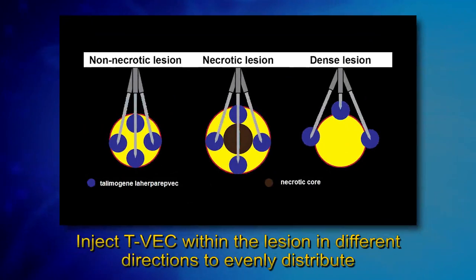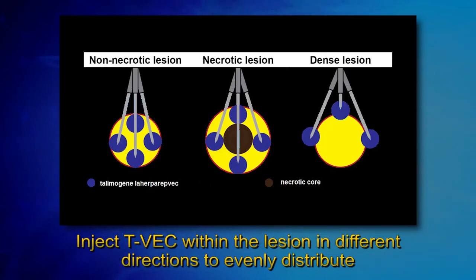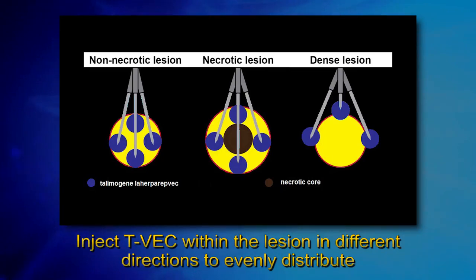In general, Telimagine Leherperepvec should be injected into multiple viable areas of the tumor. A needle can be inserted to the most distal pole of the tumor and then have Telimagine Leherperepvec released along the needle tract as the injection needle is slowly pulled to the proximal pole of the tumor. The introducer needle can also be angled slightly to allow different needle tracts within a tumor to be injected. In necrotic lesions, injection into the necrotic cores should be avoided. In tumors that are too dense to penetrate with the needle, inject along the outer periphery of the tumor.